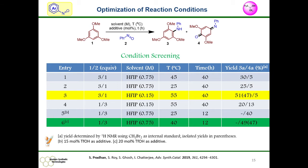For optimization of the reaction condition, we took electron-rich trimethoxybenzene as a standard substrate and nitrosobenzene as a coupling partner. We found that entry 3 is the best reaction condition, forming the diarylmethane as a major product at 51% yield, with para-aminoquinone as a minor product at only 5%. However, after reversing the stoichiometry to 3 equivalents of nitrosobenzene and 1 equivalent of trimethoxybenzene in the presence of triflic acid as a Brønsted acid additive, para-aminoquinone was formed as the major product and no amination product was obtained.